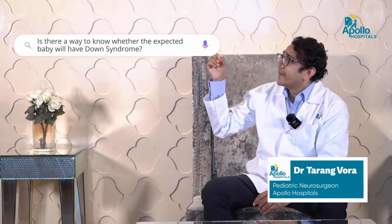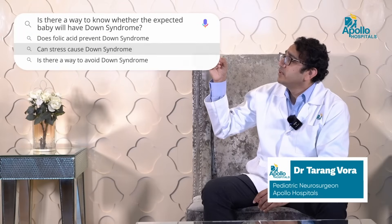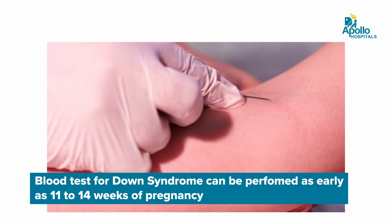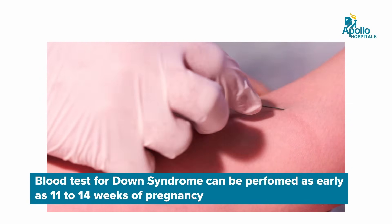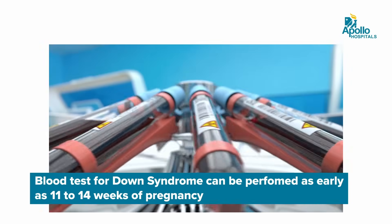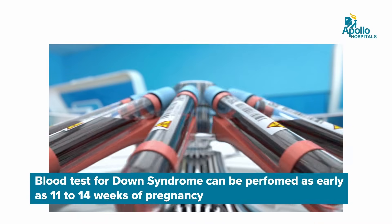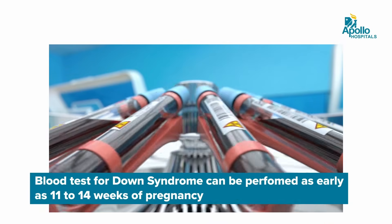Is there a way to know whether the expected baby will have Down syndrome? Yes. On prenatal testing, when you go for your routine checkups with your gynecologist, your gynecologist will suggest two tests which can help determine whether your child is likely to have Down syndrome. The first one is a screening test in which a blood sample is taken around 15 weeks of age. We do a double test or a quadruple test, in which the blood sample can give us a probability whether your child has a high risk or a low risk of developing Down syndrome.